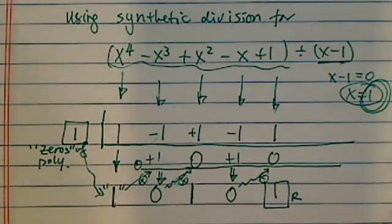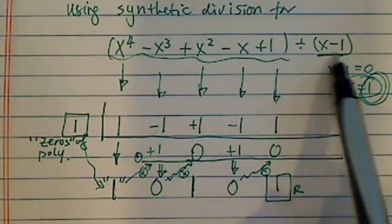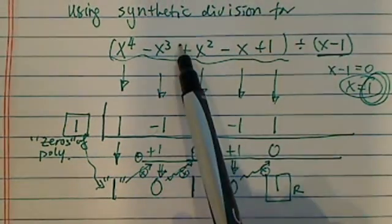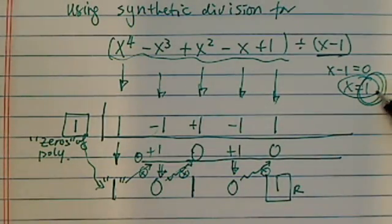This last one is my remainder. Because it's a remainder of 1, this x minus 1 is not a factor of this. Another way to say that is x equal to 1 is not a zero.